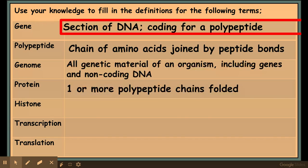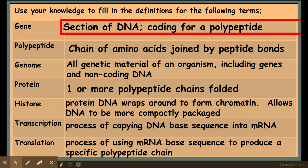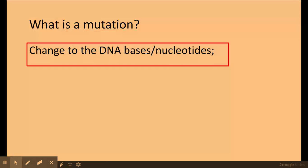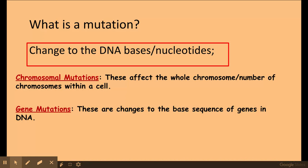I've got a couple of definitions popping up here. I want to highlight that top one, which has been taken directly from the mark scheme — it's really important we know that one. A mutation is a change to the DNA bases or nucleotides. There are two general types you need to know about: chromosomal mutation and gene mutation.